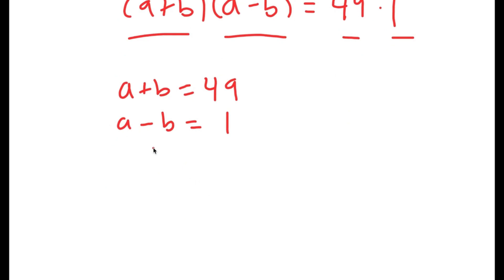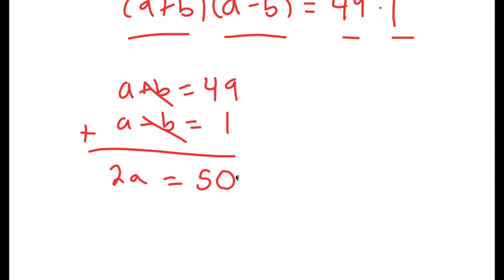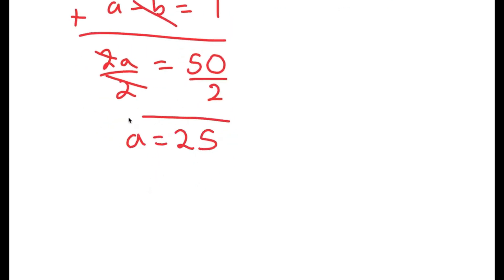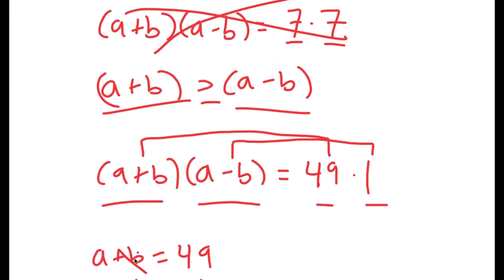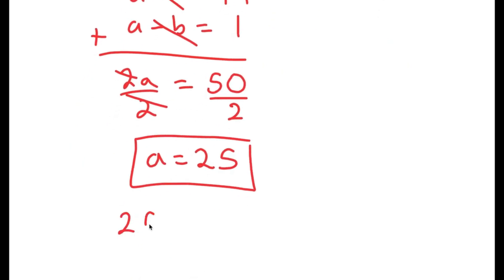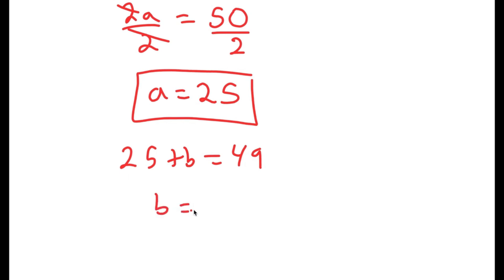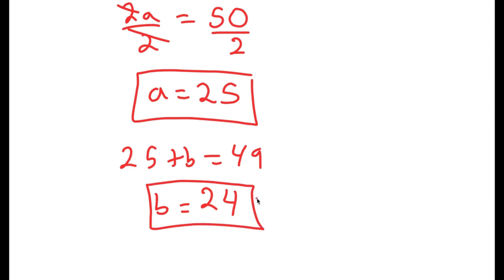We have a system of equations: a plus b equals 49 and a minus b equals 1. Adding these equations, the b terms cancel, giving 2a equals 50, so a equals 25. Substituting back, 25 plus b equals 49, so b equals 24. Therefore a equals 25 and b equals 24.